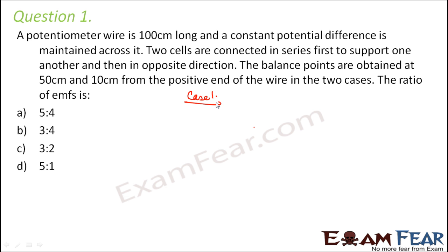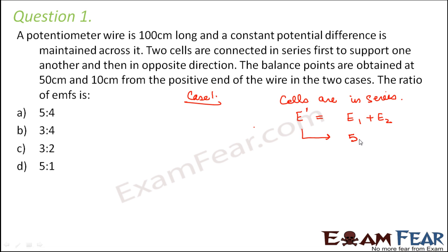In case one, the cells are in series supporting each other, so the equivalent EMF is equal to E1 plus E2 — the sum of the EMFs of the two cells. Corresponding to this EMF, the balancing point L1 is at 50 centimeters.